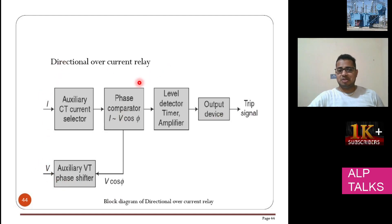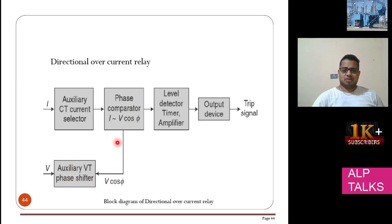For the directional overcurrent relay, both I and V are required as inputs. With both voltage and current terminals available, the direction of power flow can be determined.